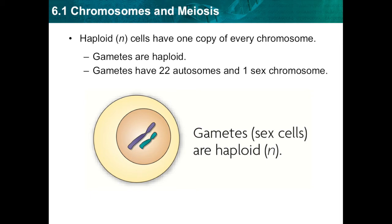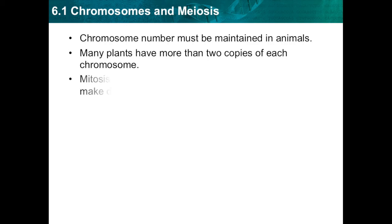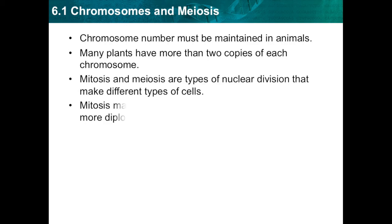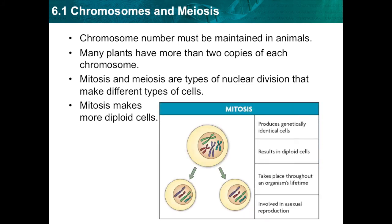Gametes are haploid cells. Haploid cells have one copy of each chromosome — 23 for humans. A sperm and egg join together to form a diploid cell, for a total of 46 chromosomes in humans. Body cells are all diploid, and only gametes are haploid.